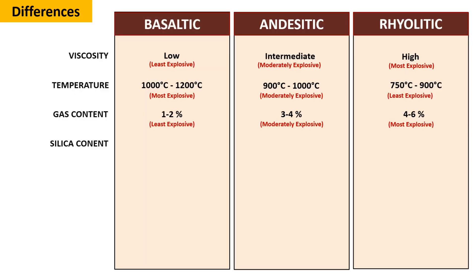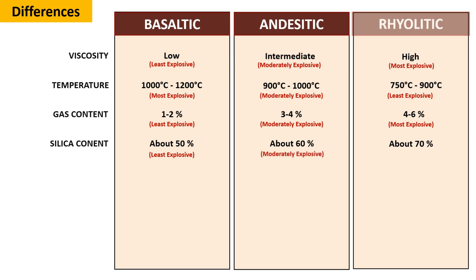The silica content in basaltic magma is approximately 50%. In andesitic magma, it's around 60%. And in rhyolitic magma, it reaches about 70%. Among these, basaltic magma with the lowest silica content is the least explosive. Andesitic magma with an intermediate silica level is moderately explosive. While rhyolitic magma, having the highest silica content, is the most explosive.